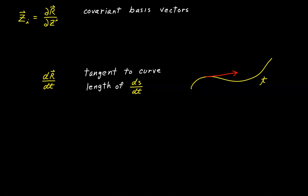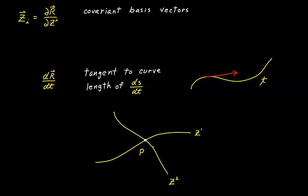Now imagine we have some two-dimensional space with a point and a couple of coordinate lines, one for z1 and one for z2. A coordinate line for z1 is that line mapped out when we hold all coordinates constant except z1. So whatever the value of z2 is at this point, we hold that fixed as we vary z1, and that maps out this line. Likewise, if we hold z1 constant and vary z2, we'll map out the other line.